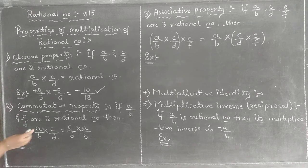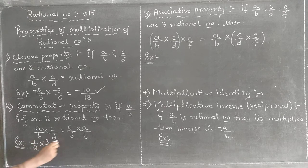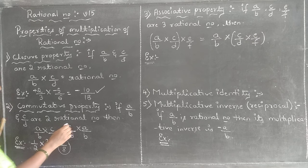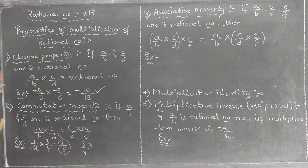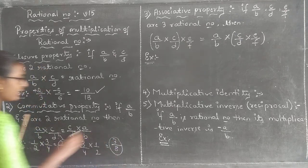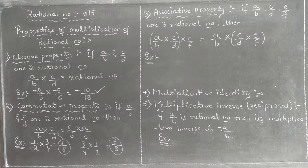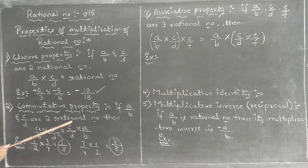Let me verify it by taking an example. Let A/B be 1/2 and C/D be 3/4. Now solving the LHS: 1/2 into 3/4 gives 1×3 = 3, 2×4 = 8, so LHS = 3/8. Now for RHS: C/D into A/B is 3/4 into 1/2, which gives 3×1 = 3, 4×2 = 8, so RHS = 3/8 as well. In LHS I got 3/8 and in RHS also I got 3/8. So yes, multiplication of rational numbers satisfies commutative property.